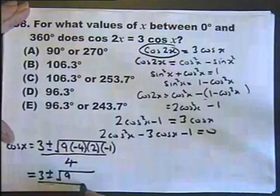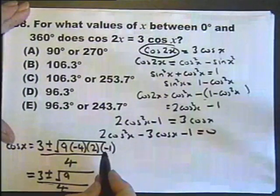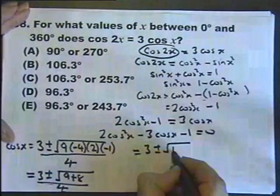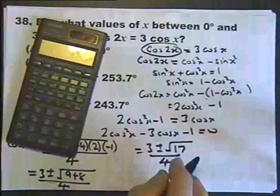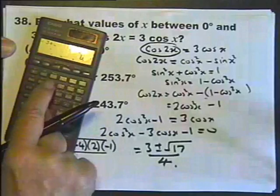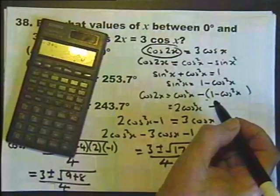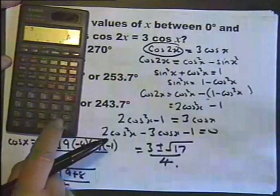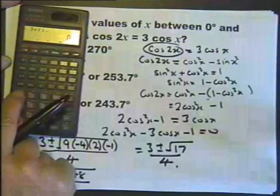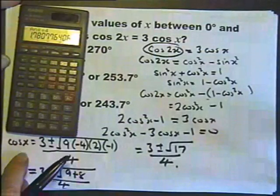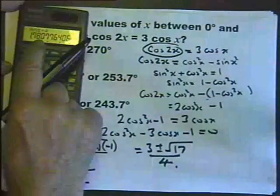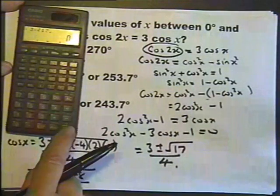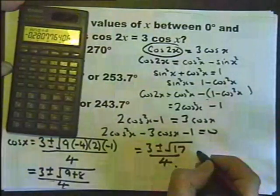That gives 9, and minus times a minus is a plus, so 4 times 2 is 8 times 1 is still 8, giving 3 plus or minus the square root of 17, over 4. Now, 3 plus the square root of 17, divided by 4 — this is the cosine of an angle, and the cosine of an angle can't exceed 1, so that's an invalid answer and I ignore it. So I do 3 minus the square root of 17, divided by 4. That is the cosine of the angle.